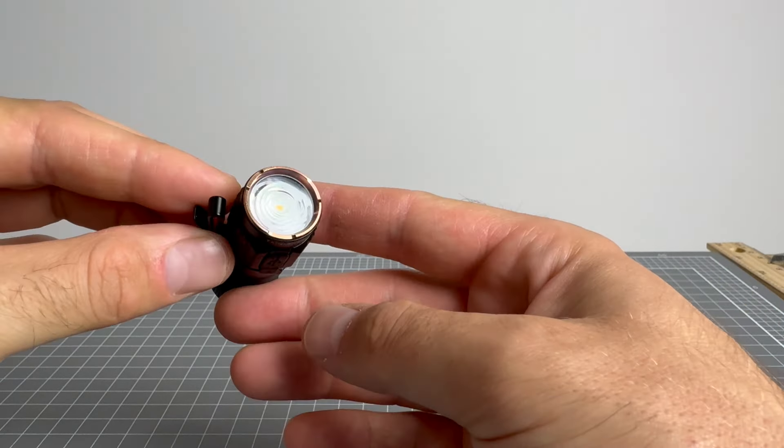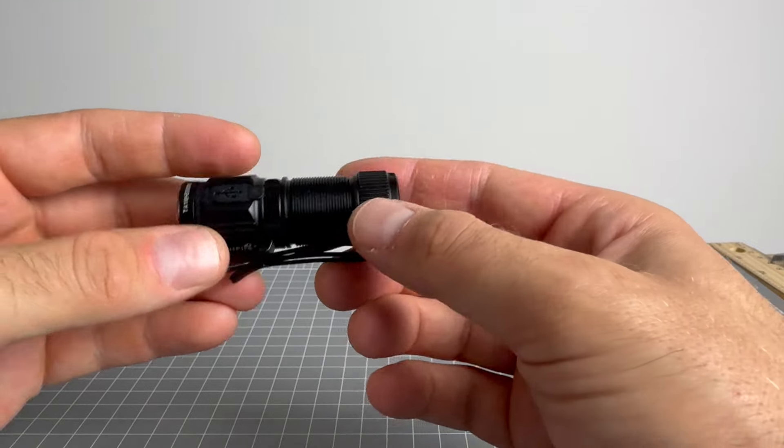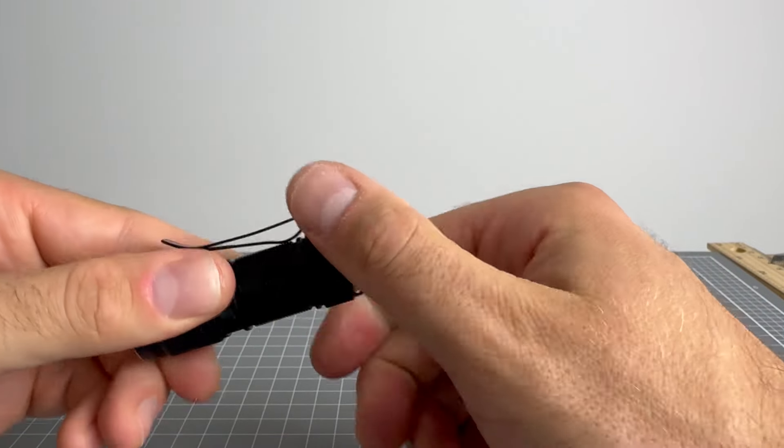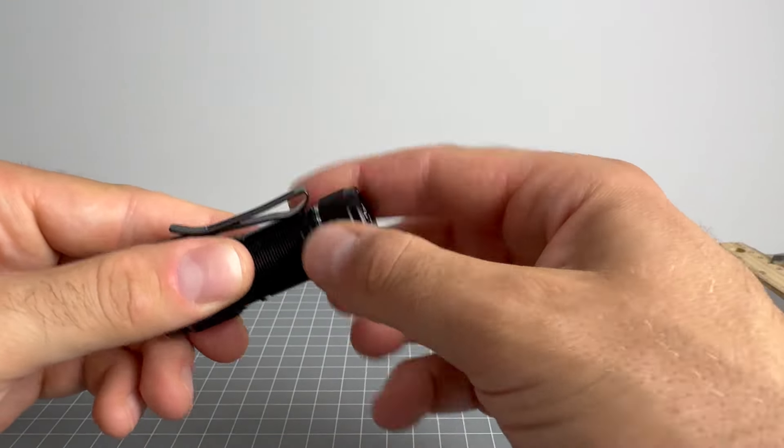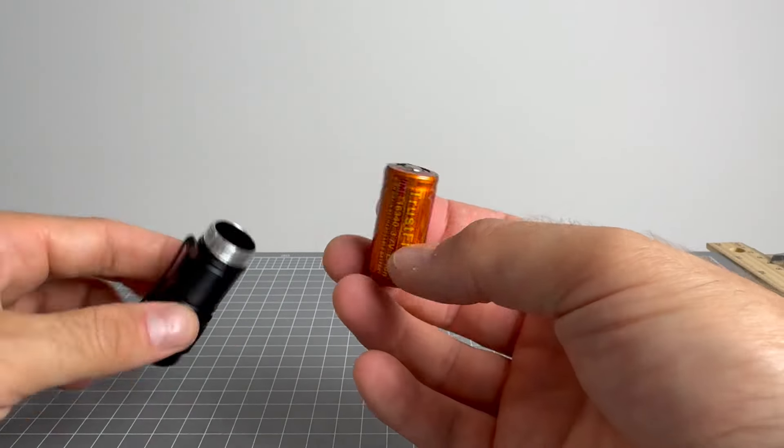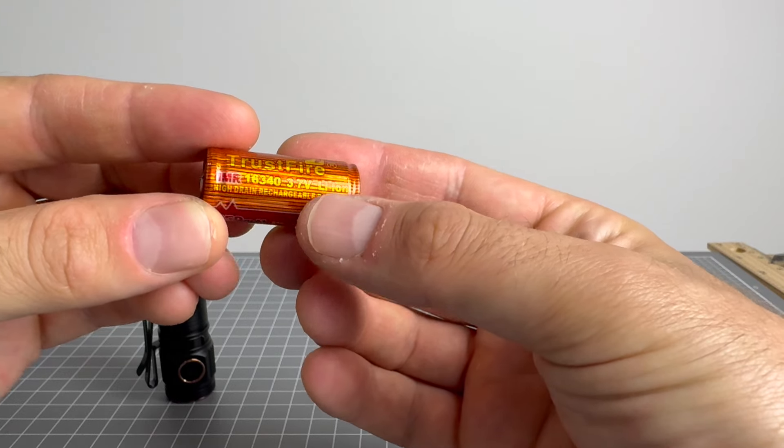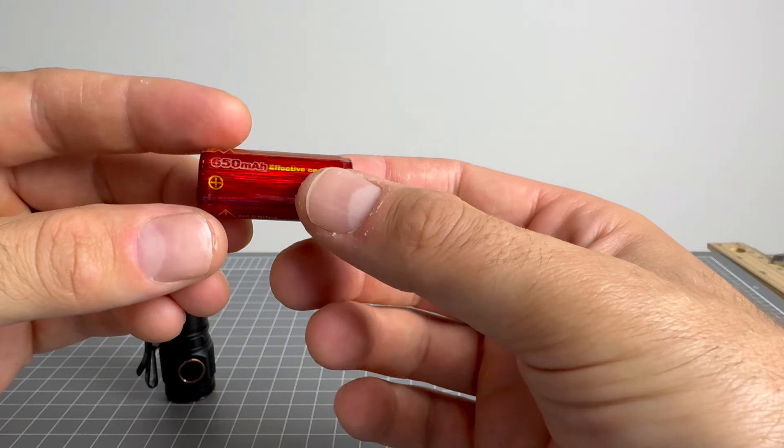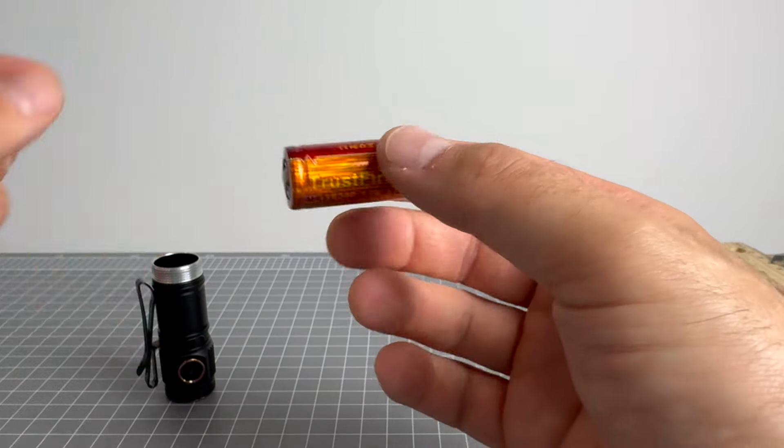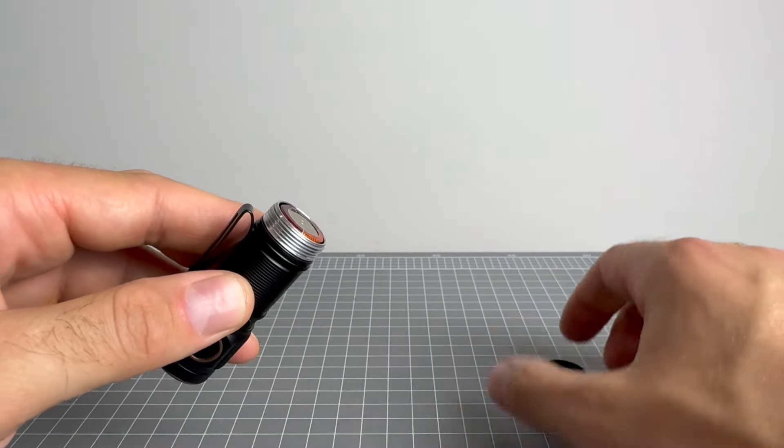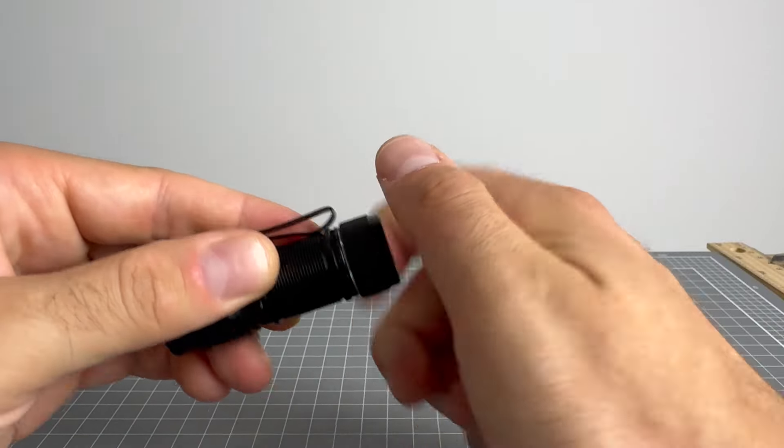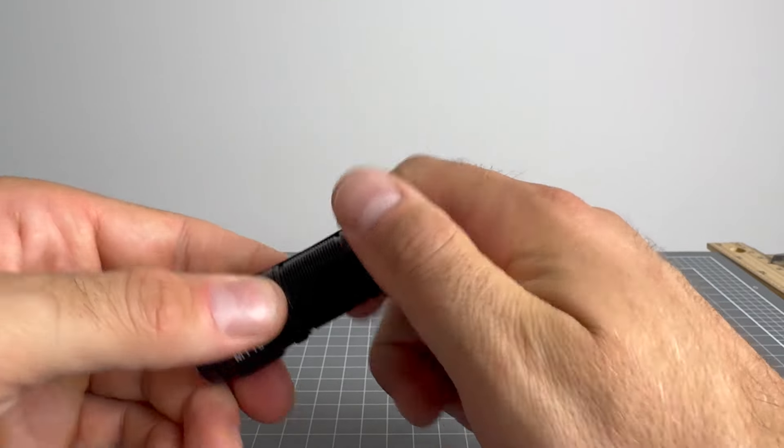You want it compact. You want it to hold a 16340, which is what it's got. In fact, I'll just show you. There it is there. The Trust Fire 16340 3.7 volt lithium ion. Don't believe this is a protected cell. So I would hope that this light has low voltage protection. Not saying it doesn't, but I'm not saying it does because I don't know.